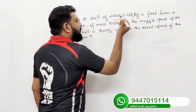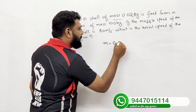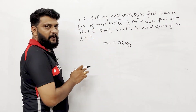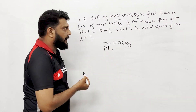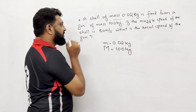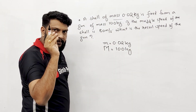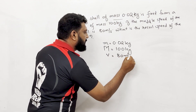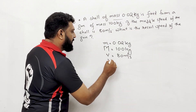Given: bullet mass m = 0.02 kg, gun mass capital M = 100 kg, muzzle velocity of the bullet small v = 80 metres per second. We need to find the recoil velocity of the gun, capital V.